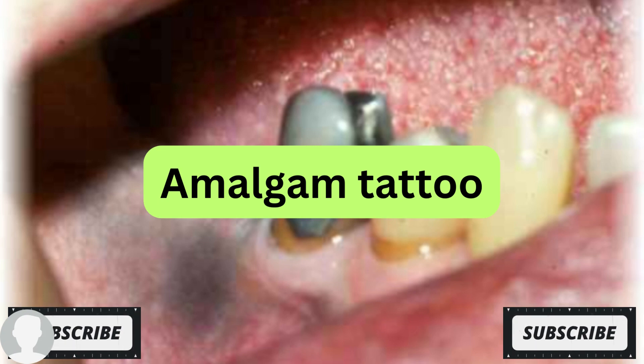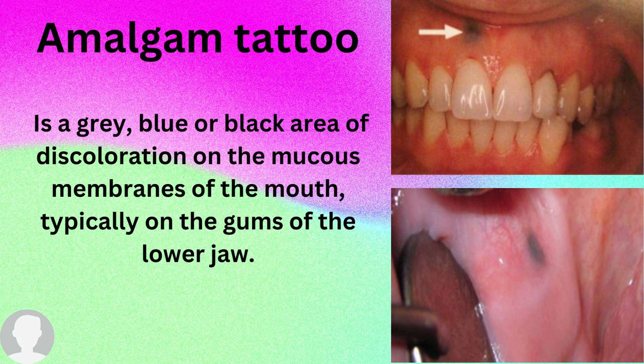As the name suggests, an amalgam tattoo is not found on your body — it is found in the oral cavity. It's called an amalgam tattoo because amalgam is used inside the mouth on the teeth, so it is essentially a tattoo inside your mouth.